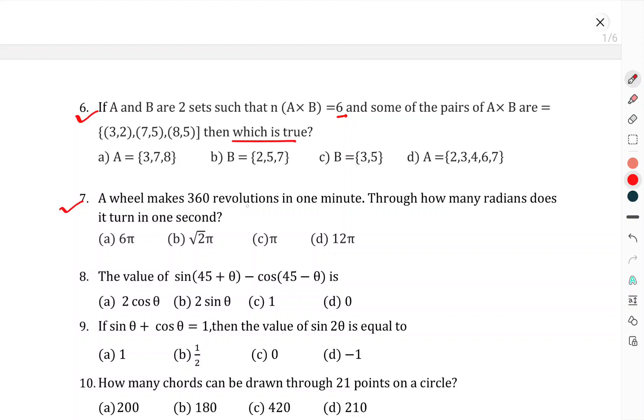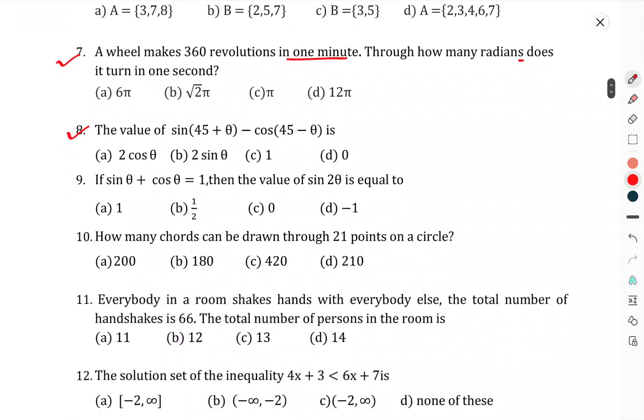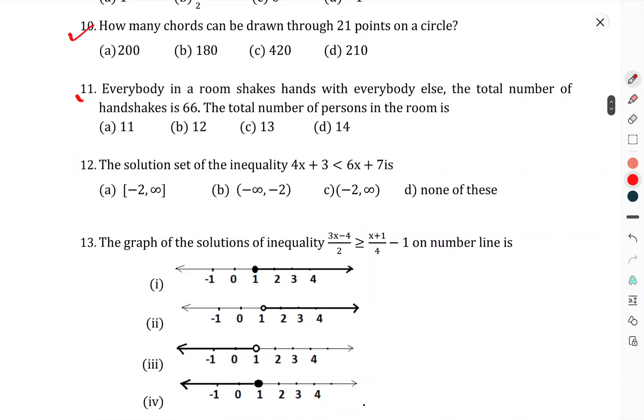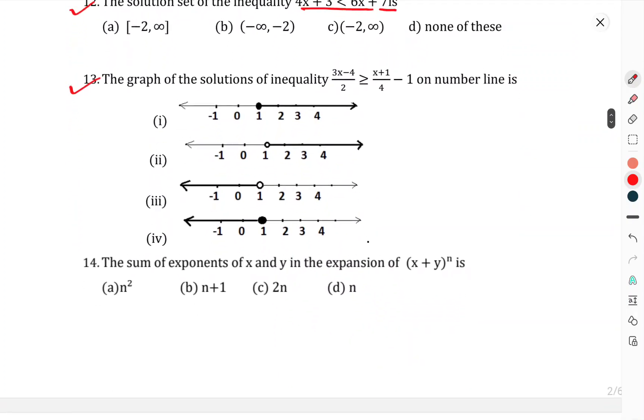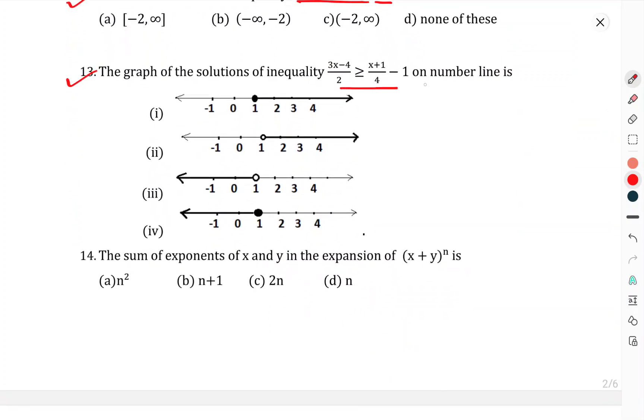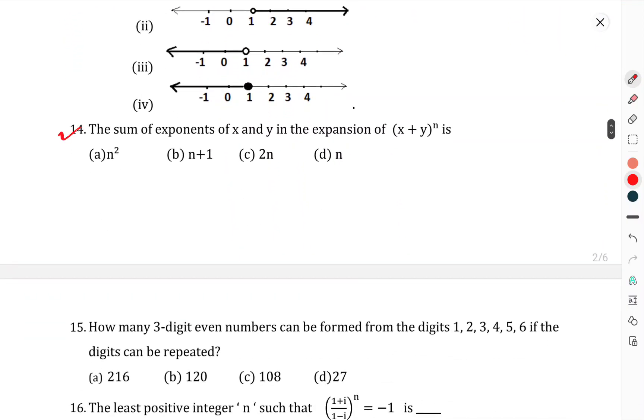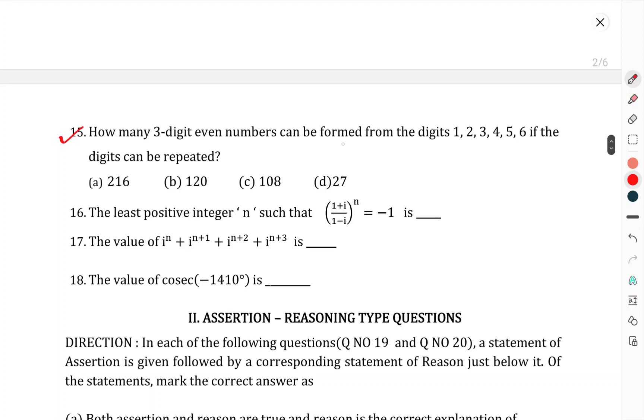Question number 7: A wheel makes 360 revolutions in 1 minute. Through how many radians does it turn in 1 second? Question number 8: The value of sin(45 + θ) minus cos(45 - θ) is. Question number 9: If sin θ plus cos θ equals 1, then the value of sin 2θ equals. Question 10: How many chords can be drawn through 21 points of a circle? Question 11: Everybody in a room shakes hands with everybody else. The total number of handshakes is 66. The total number of persons in the room is. Question 12: The solution set of the given inequality is.